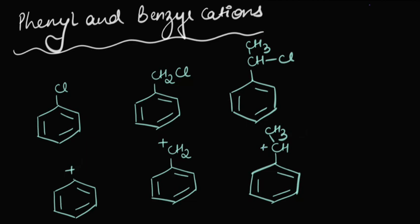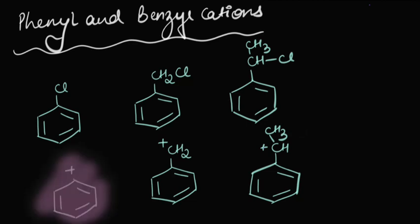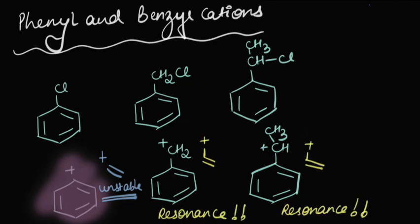Looking at the first carbocation, there's a benzene ring with a positive charge on the ring — a doubly bonded carbon carrying a positive charge — which is highly unstable, so it wouldn't form. A phenyl substrate therefore wouldn't want to react via SN1 mechanism. In the other two cases, the positive charge is alternate to a pi bond, so there is a possibility of resonance in each case, and through this resonance the positive charge spreads out over the entire ring.